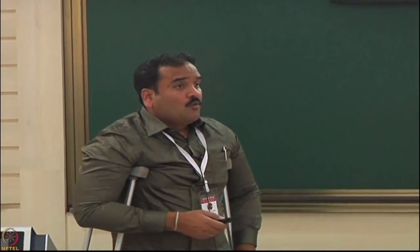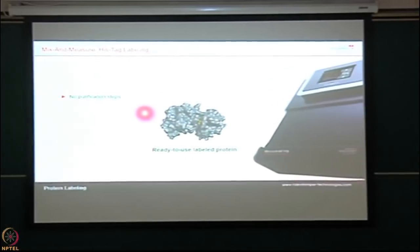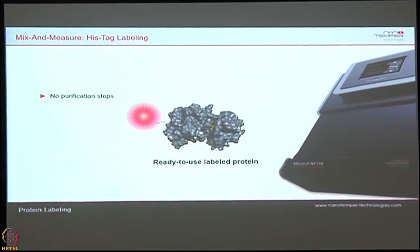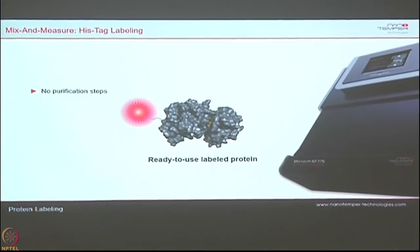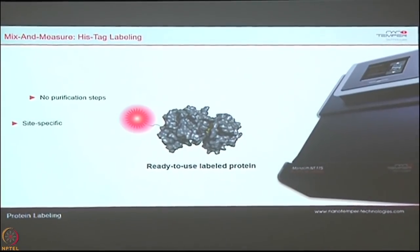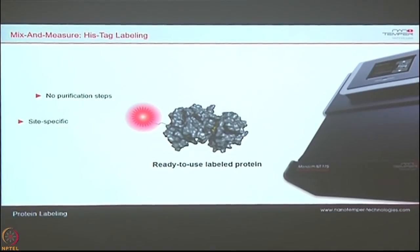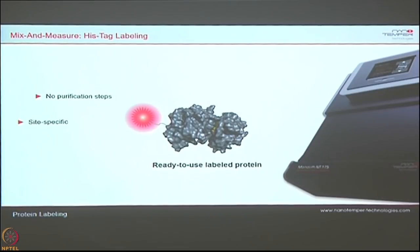We recently came out with a kit where you can label your His-tag protein — at the 6-histidine position. The biggest advantage is that you need not purify your protein. If your protein is in the cell lysate and is already His-tagged, you simply add the dye and do the titrations. Even in cell lysates, specific interaction studies can be successfully done.